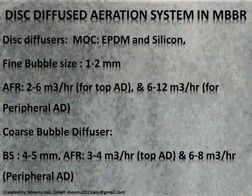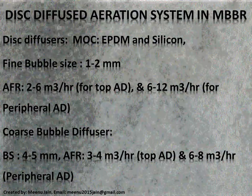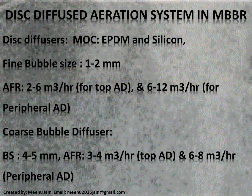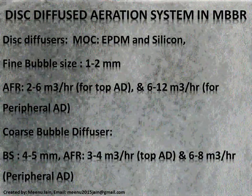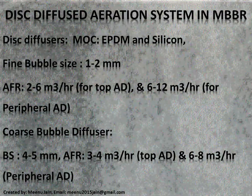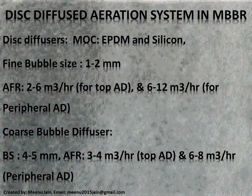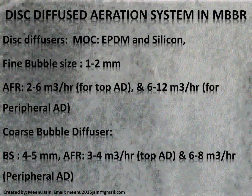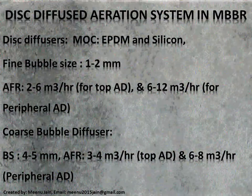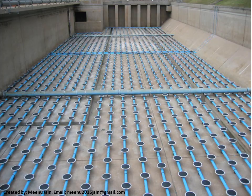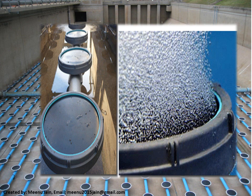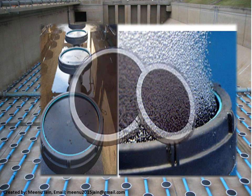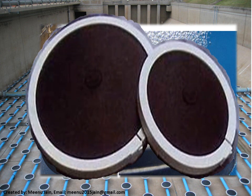In fine bubble disc diffusers, the bubble size is 1–2 mm and the air flow rate is 2–6 m³/hr for top air discharge and 6–12 m³/hr for peripheral air discharge. In coarse bubble disc diffusers, the bubble size is 4–5 mm and the air flow rate is 3–4 m³/hr for top air discharge and 6–8 m³/hr for peripheral air discharge. This is the disc diffuser system in an MBBR tank, showing disc diffusers connected to pipe and header, a zoomed view of one disc functioning, and a zoomed image of a single disc diffuser.